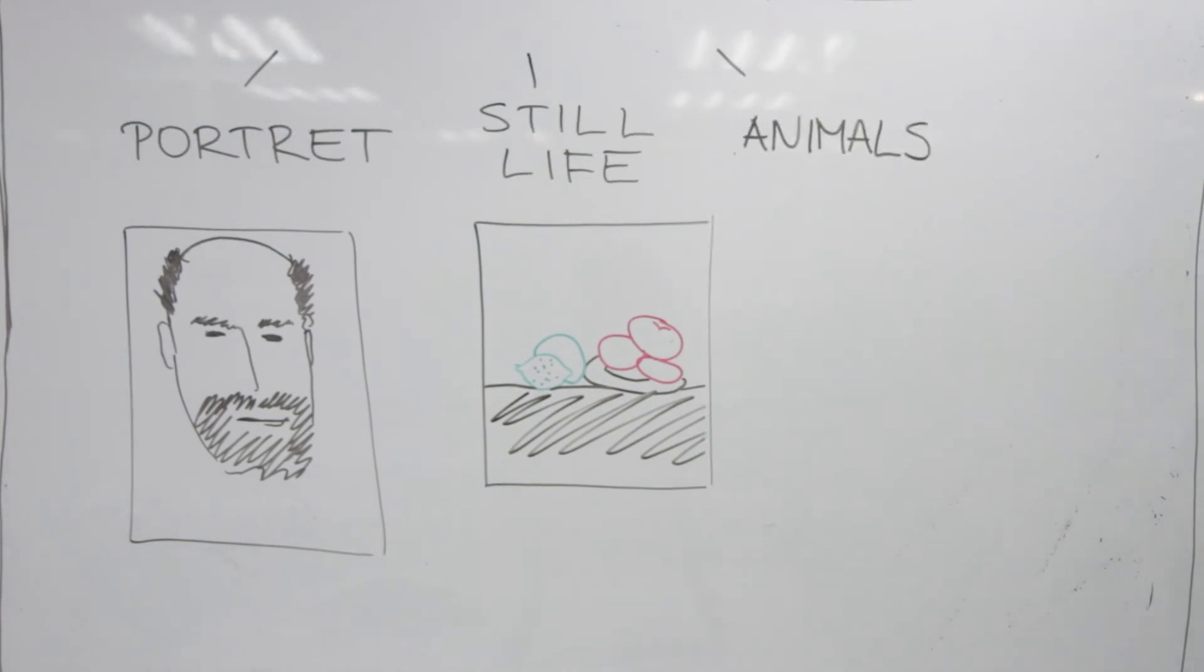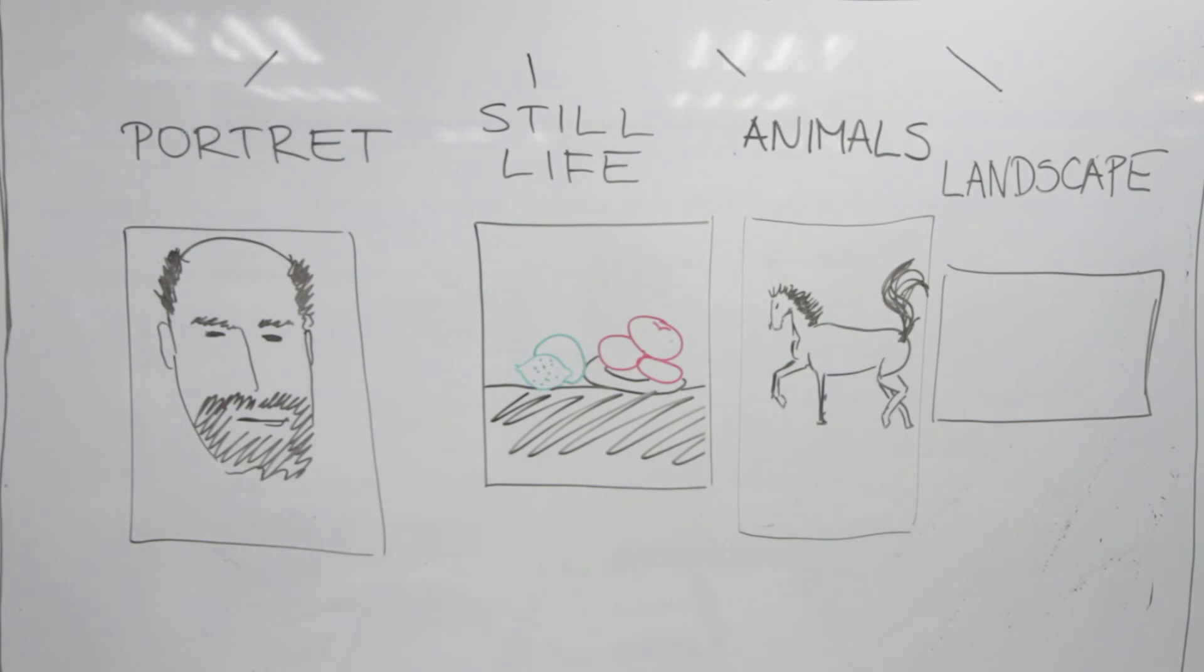Then there's also animals. That's a popular subject as well. Maybe horses are very popular to draw. And also landscapes. Landscape is when you draw a nature around you, like a river or a hill or a tree.